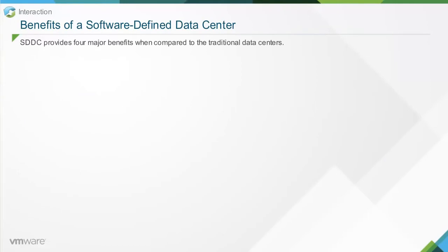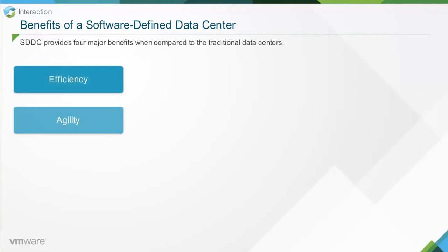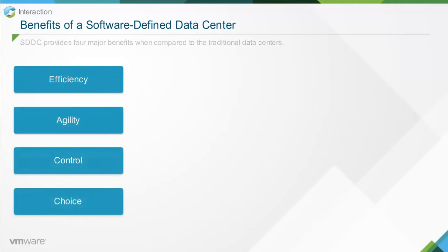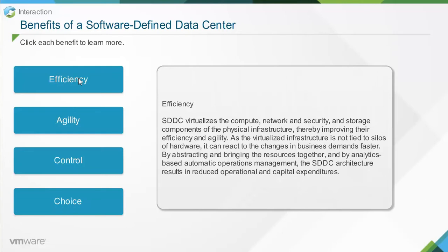SDDC provides four major benefits when compared to traditional data centers: efficiency, agility, control, and choice. SDDC virtualizes the compute, network, security, and storage components of the physical infrastructure, thereby improving their efficiency and agility. As the virtualized infrastructure is not tied to silos of hardware, it can react to changes in business demands faster. By abstracting and bringing resources together with analytics-based automatic operations management, the SDDC architecture results in reduced operational and capital expenditures.